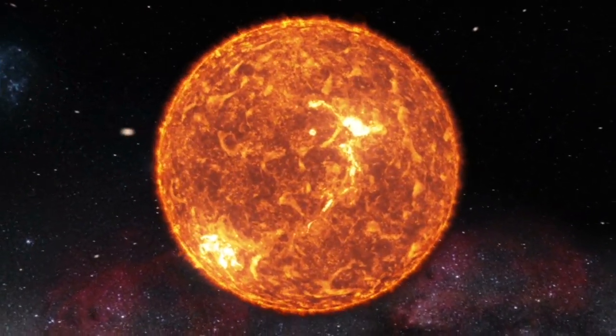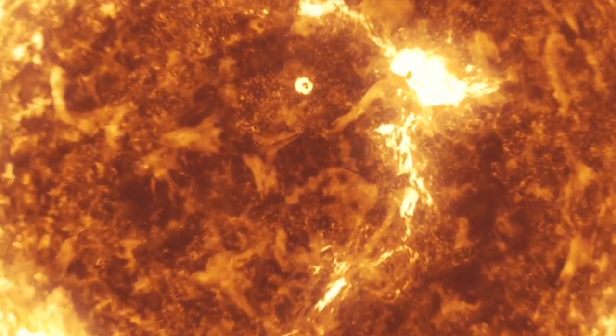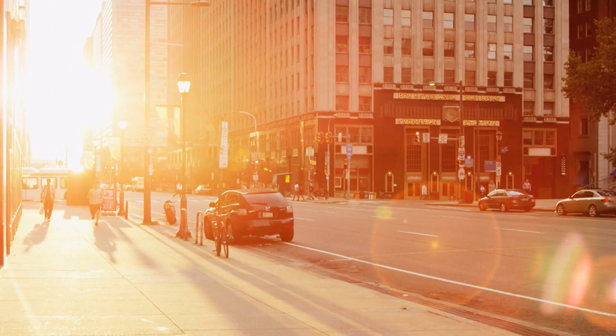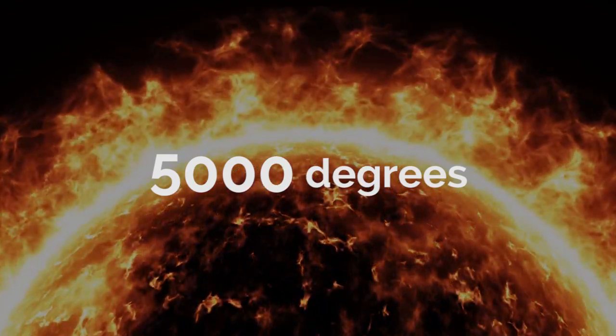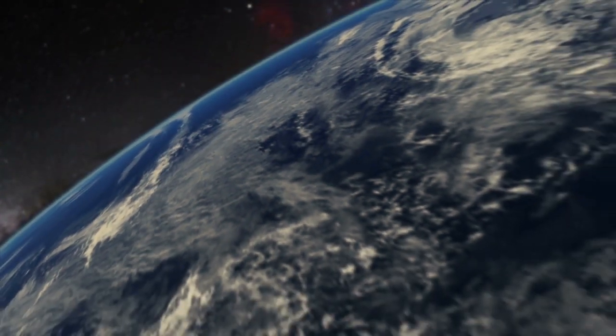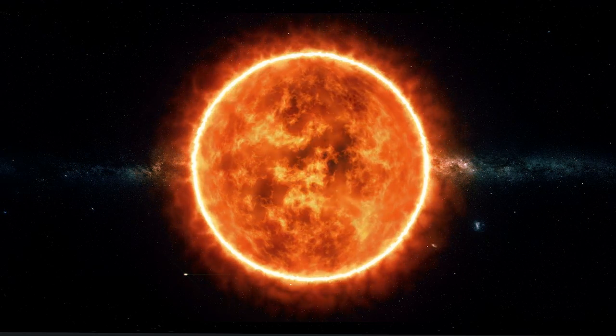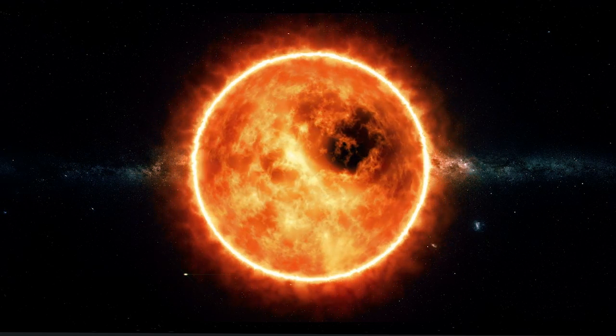No matter how you slice it, the sun is ridiculously hot. And yet for some unknown reason, it actually gets hotter the further away you are from it. The sun's surface temperature is roughly 5,000 degrees. While it's certainly scorching, it's nothing compared to our star's atmosphere, called the corona.